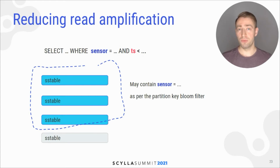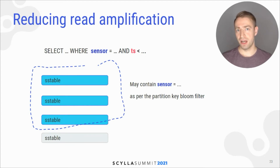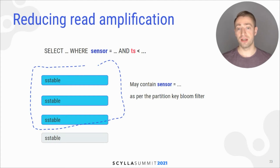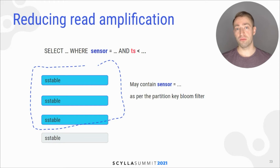There is a partition key bloom filter which allows us to rule out SS tables which don't contain a given partition key. However, it's ineffective for time series workloads because for time series, the queried partition will most likely be in all SS tables.